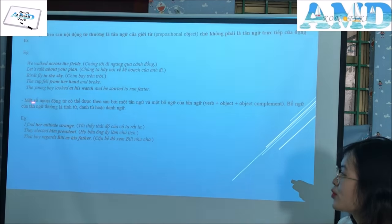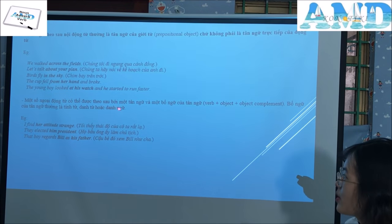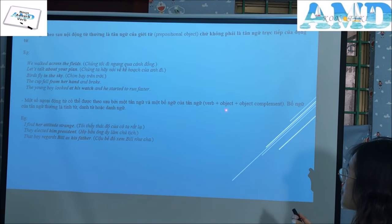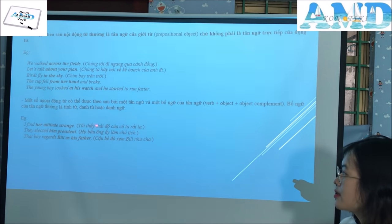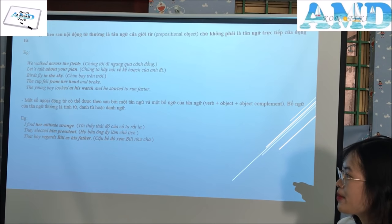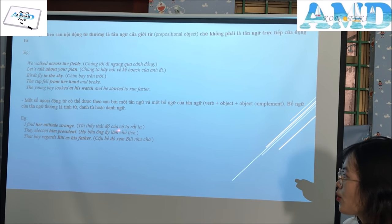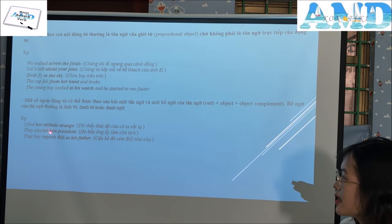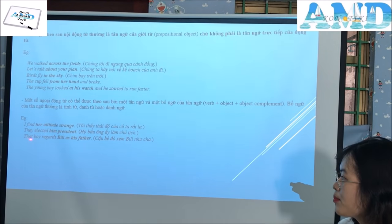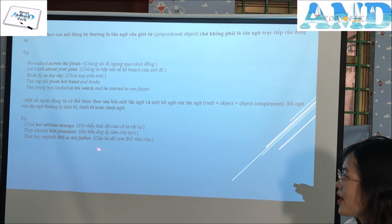Final note: some transitive verbs can be followed by an object and an object complement. The object complement is usually an adjective, noun, or noun phrase. For example: 'I find her attitude strange.' 'They elected him president.' 'That boy regards Bill as his father.'